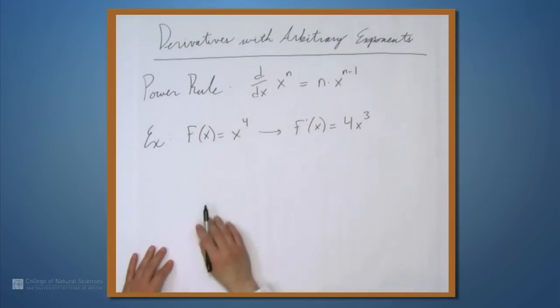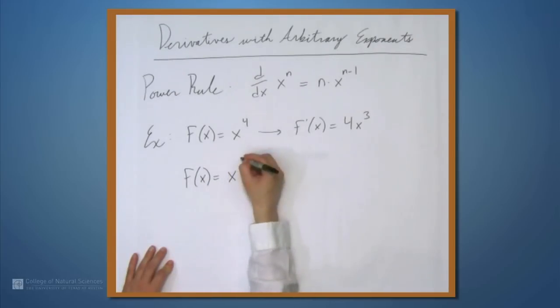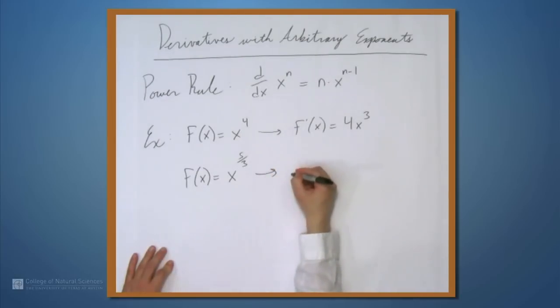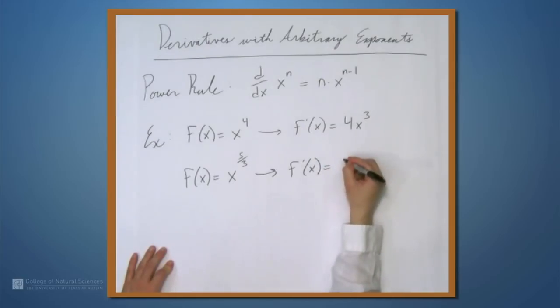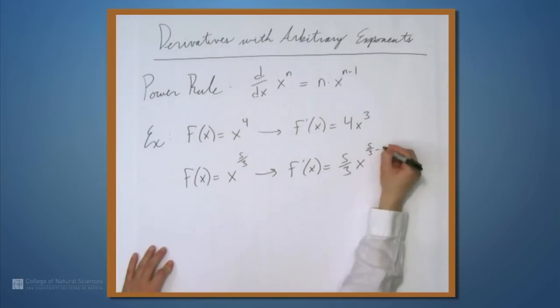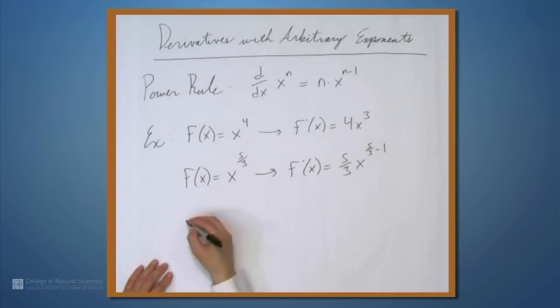But it doesn't have to be an integer. Let's say that f(x) is x to the 5 thirds. This means that f'(x) is 5 thirds times x to the 5 thirds minus 1. The exponent doesn't even have to be rational or positive.